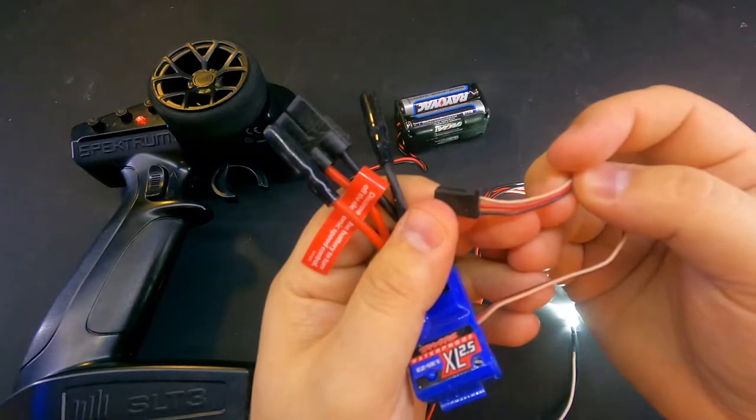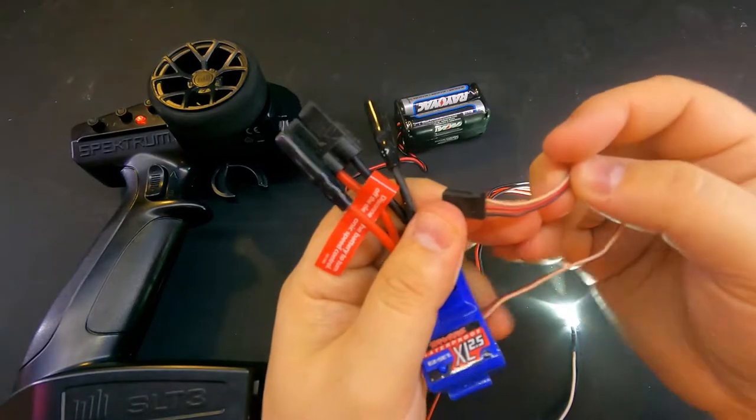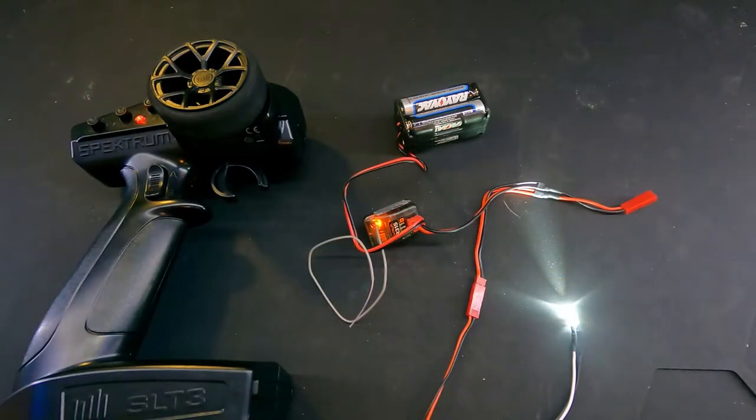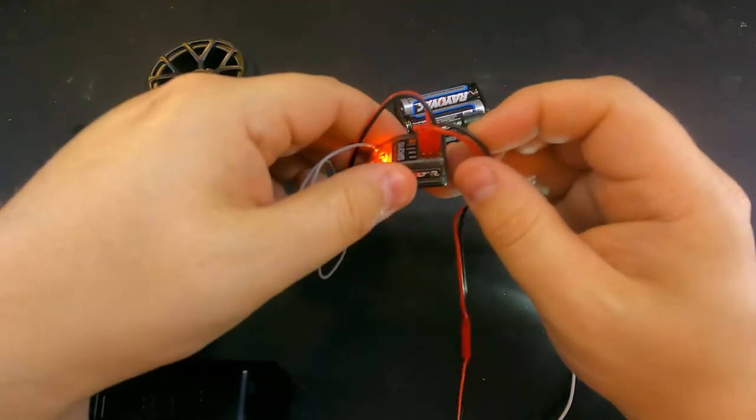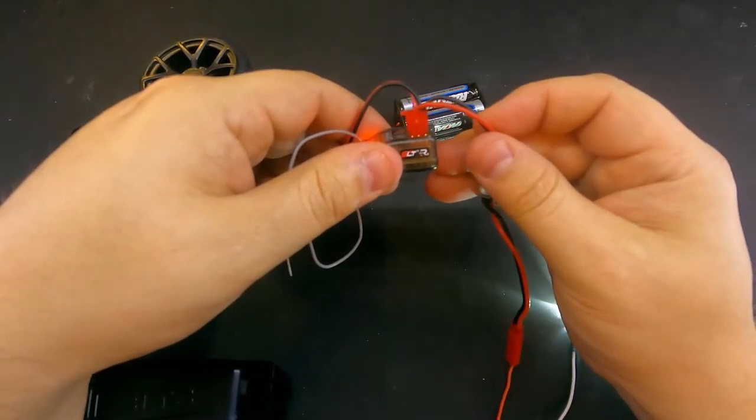So, in the case of a speed controller, it would be go forward or go backward, and a servo would be go left or go right. Now, in a traditional light kit, you only have two cables, so you don't have that third cable to receive that pulse width signal.